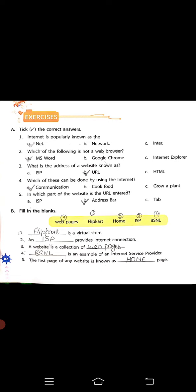Third - a website is a collection of web pages. Beta, website meh bohot sari web pages hoti hai. Jab hum koi bhi website open karti hai to us meh bohot sari pages hoti hai jinko hum web pages bolte hai. Fourth - BSNL is an example of an internet service provider. Beta, BSNL ek internet service provider ki example hai.